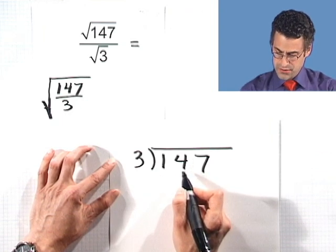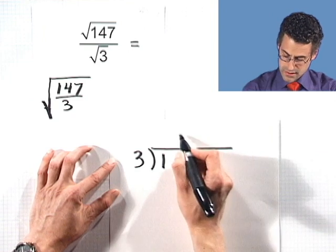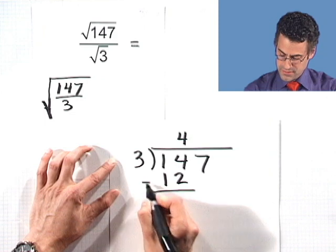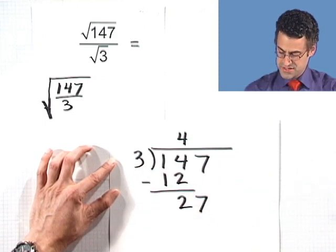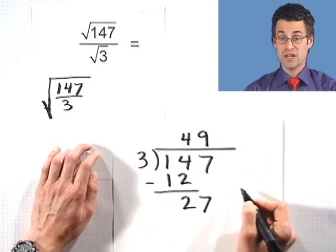So 3 goes into 14, 4 times. 4 times 3 is 12. When I subtract, I get a 2. I bring down the 7. And so 3 goes into 27 9 times.